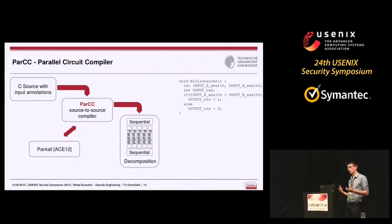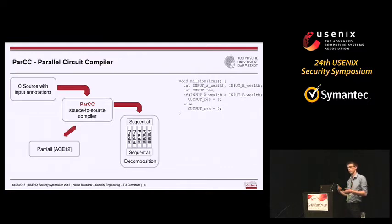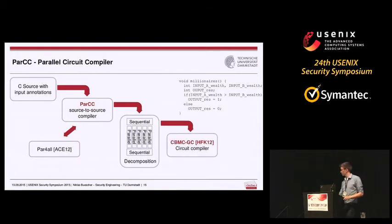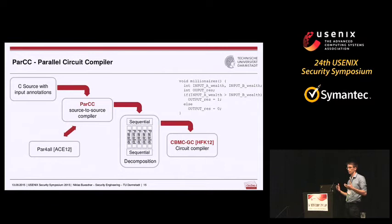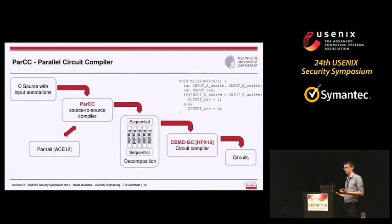We then decompose the source code into multiple files — a sequential part, a parallel part, another sequential part — and give these files to our circuit compiler CBMC-GC. We add mapping information to identify inner inputs, outer inputs, and outputs, and the compiler creates circuits based on this information.